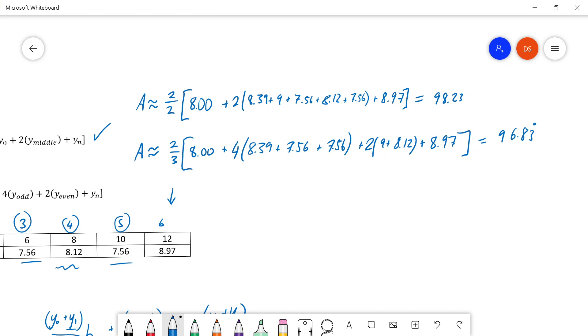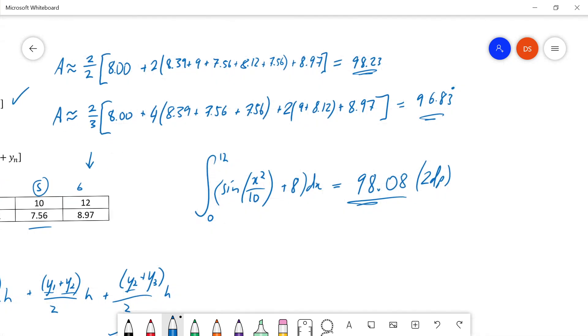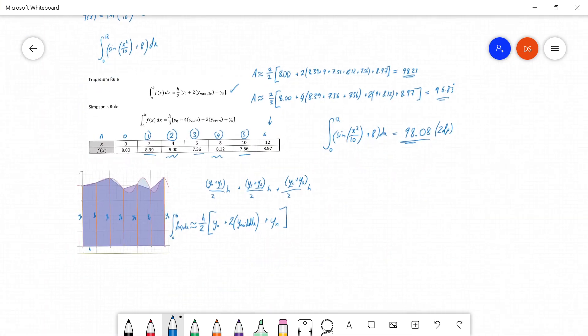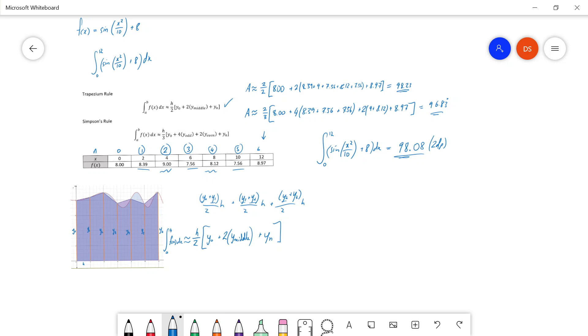And if you want to check the actual area, well, we can't integrate it by hand, but we've always got the wonderful use of our calculators. And so if I type that into my calculator, the integral from 0 to 12 of sine of x squared over 10 plus 8 dx, well, let's see what happens. So we look at this, and we go, oh Mr. Dama, it seems that the trapezium rule was closer than the Simpson's rule, and that's a very common thing. But remember, we only took six strips. If I took more strips, I would find more accuracy more quickly with the Simpson's rule. And this just so happens that it just didn't work out as nicely.